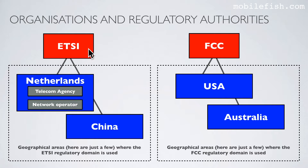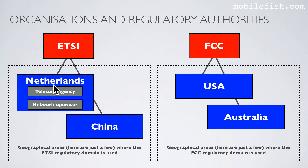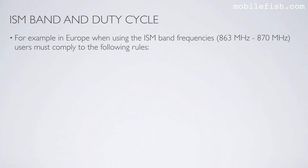Let's only focus on ETSI and FCC. Here are two geographic areas — in this example Netherlands and China — where the ETSI regulatory domain is used. And here are two geographic areas — in this case United States and Australia — where the FCC regulatory domain is used. If I focus on the Netherlands, this national regulatory authority uses the standards set by ETSI, but they can also add additional rules. Here you see the network operator. There are commercial or non-commercial operators who can set up a LoRaWAN network, and these operators can set additional rules.